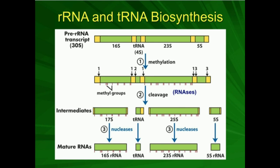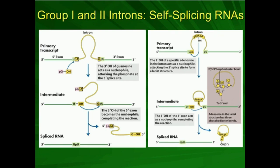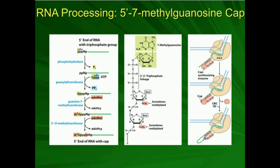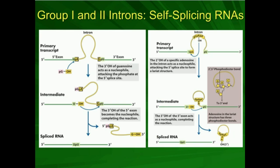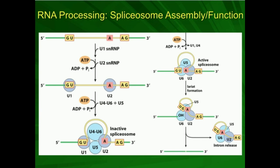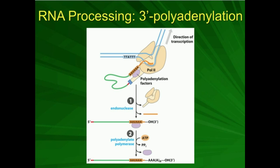When we talk about mRNA, we mentioned the three main types of processing: the production of the 5-prime 7-methylguanosine cap, our different types of splicing — whether autocatalytic splicing or spliceosome function — and then the 3-prime polyadenylation, the 3-prime poly-A tail.